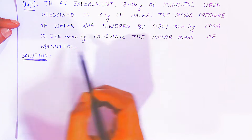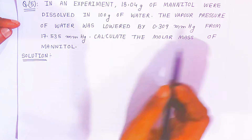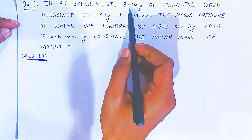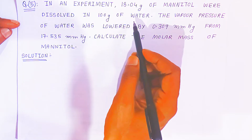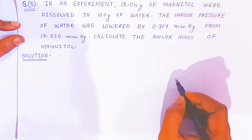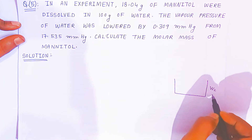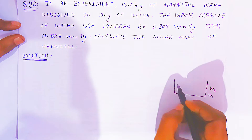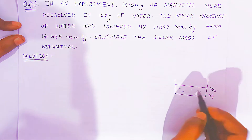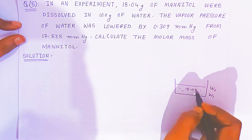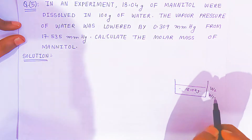We need to find M2, the molar mass of mannitol. Mannitol will be the solute. In solution you have W2 and W1 forming the solution. The weight of mannitol is given — that is W2 = 18.04 gram — dissolved in W1 = 100 gram of water, forming the solution.